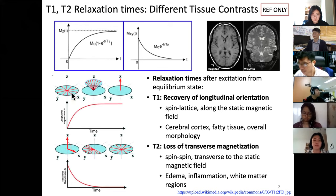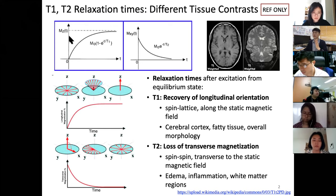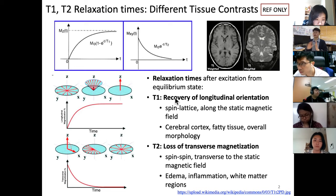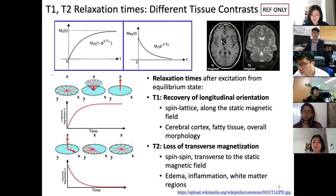When we apply an external RF pulse, the magnetization returns to the longitudinal component — that regrowth is T1 relaxation. The transverse component will dephase over time, and that dephasing in the transverse direction is T2. So to summarize: T2 relates to edema, and T1 provides clearer contrast, making it useful as an anatomical background image.